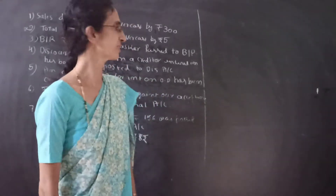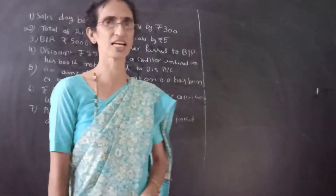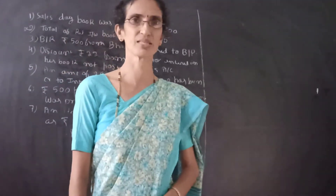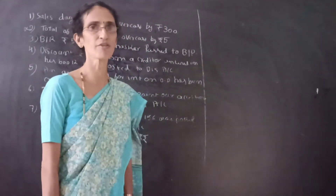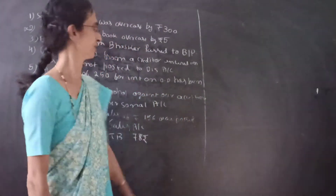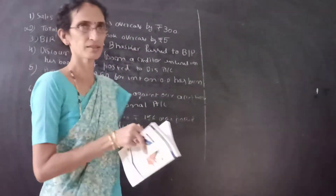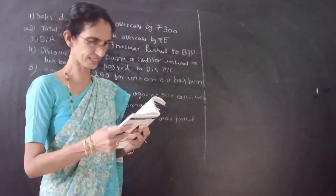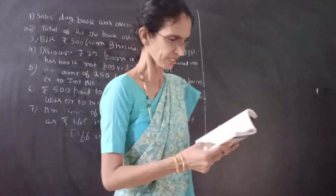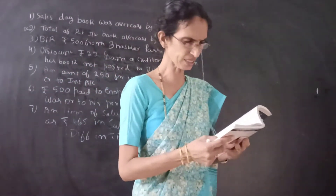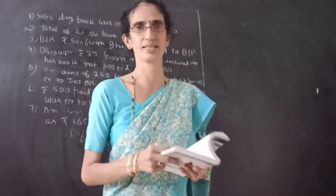Dear students, I am taking Financial Accounting of first year B.Com and that chapter is Rectification of Errors. So this is the problem. The first transaction is: sales day book was overcast by rupees 300.